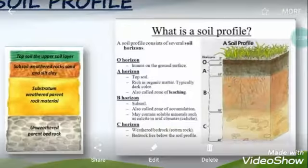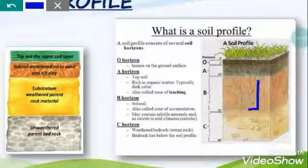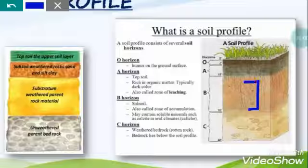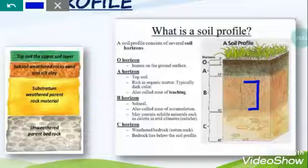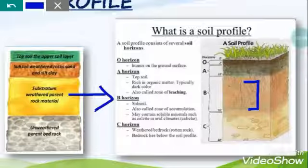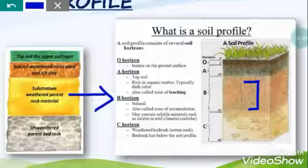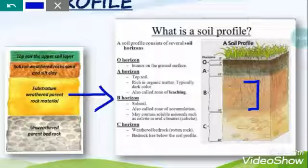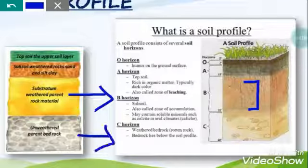The B layer — the zone of accumulation — is also called the subsoil. This layer may contain soluble minerals such as calcite. The next and last layer is the C horizon, which is made up of weathered bedrock.